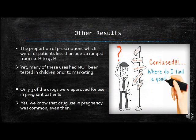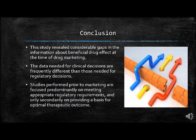The proportion of prescriptions for patients under 20 ranged from 0 to 97%, yet many of these uses had not been tested in children prior to marketing. Only three of the drugs were approved for use in pregnant patients, yet drug use in pregnancy was common. In conclusion, this study revealed considerable gaps in information about beneficial drug effects at the time of marketing. The data needed for clinical decisions are frequently different from those needed for regulatory decisions, with pre-marketing studies focused predominantly on meeting regulatory requirements rather than providing a basis for optimal therapeutic outcome.